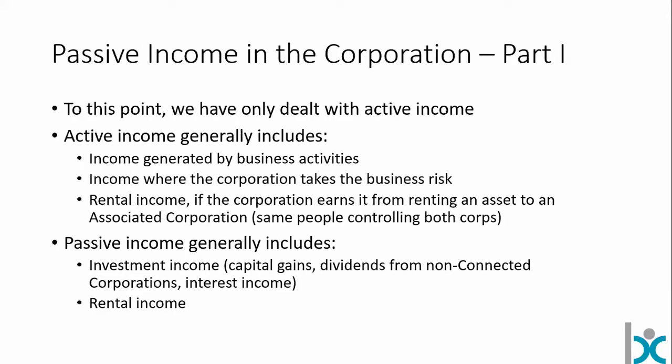To this point, we've really only dealt with active income — taxation of income in the corporation. Active income generally means it's stuff where the business actually took the risk. If something went wrong for the business, that's what would generate a problem. So if it's somebody else's business risk, then it's probably passive income for the corporation. But if it's your risk, if it's something that went wrong in your business, that's generally active income.